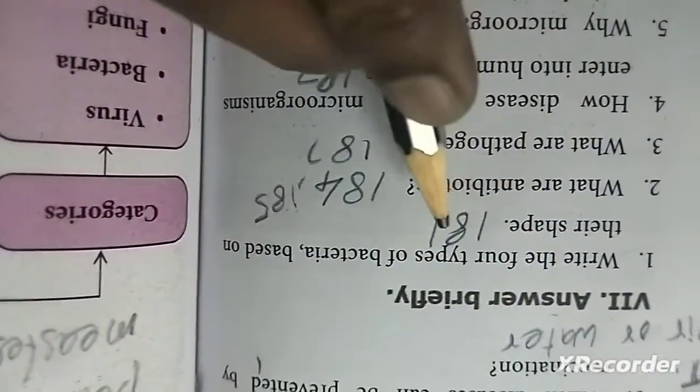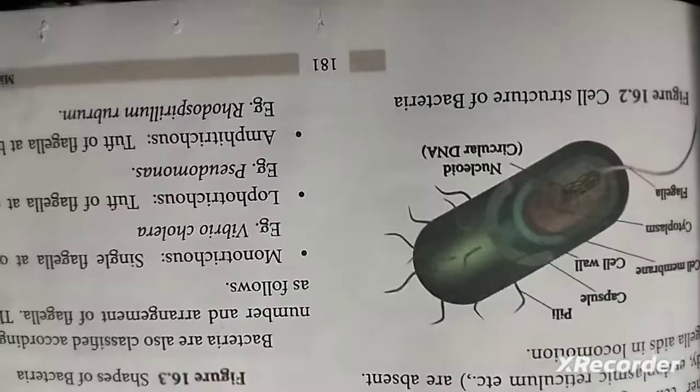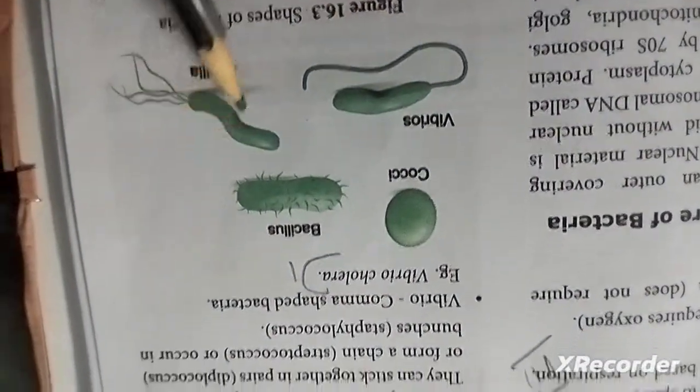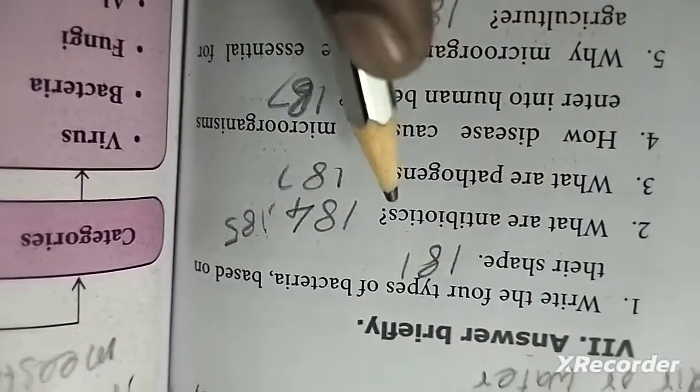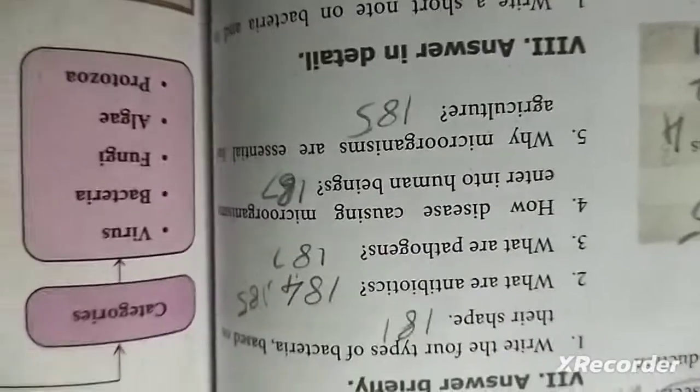Answer briefly. First question: write the four types of bacteria based on their shape - page 181. Look at the diagram to see the shapes. Next: what are antibiotics? Pages 184-185.